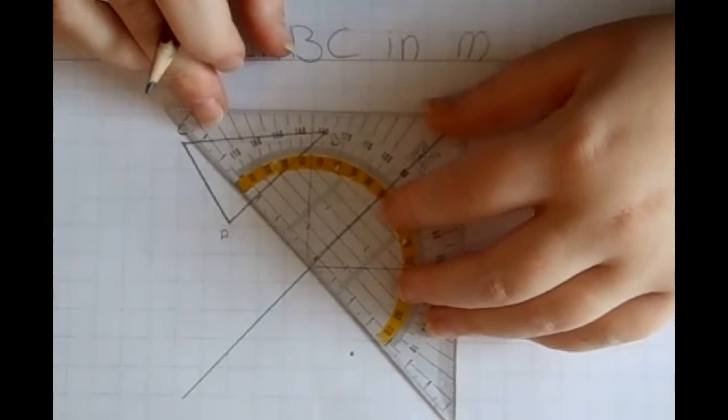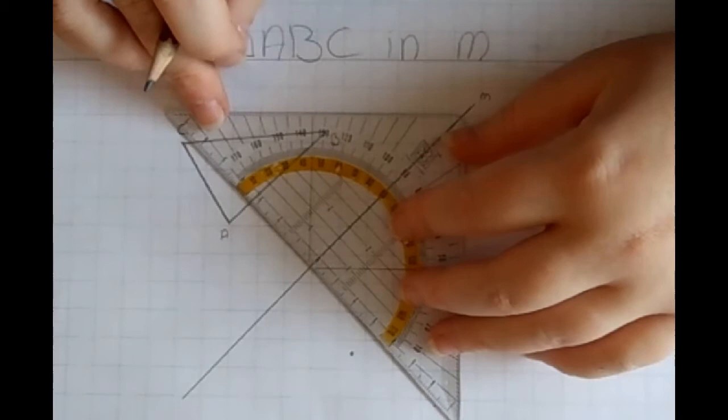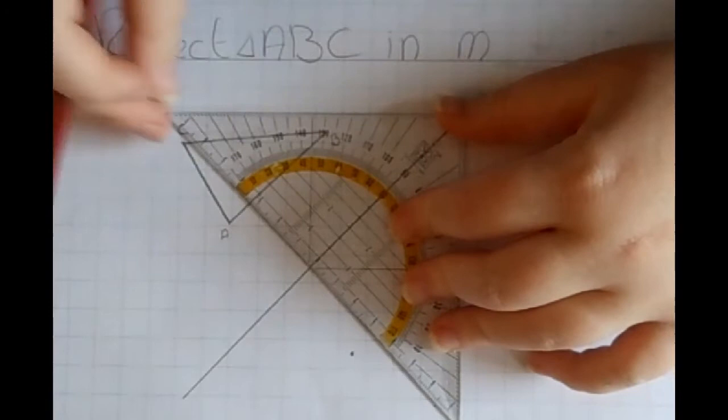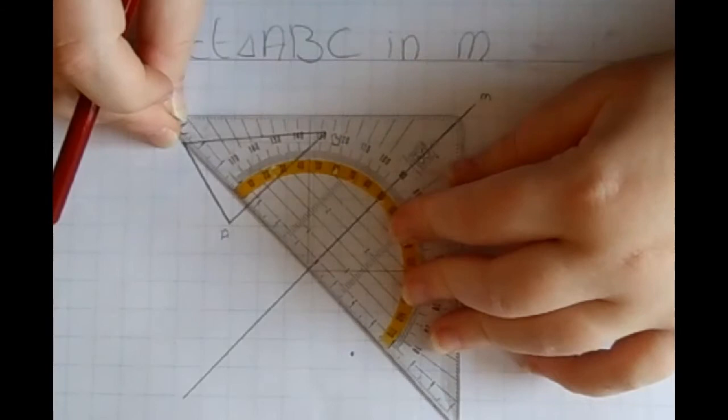Then I am moving on to another vertex of the triangle and that is C. Make sure the line is straight on the mirror line again so you get a perpendicular line to C.